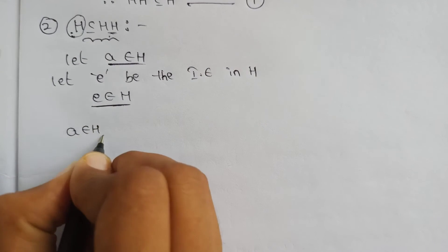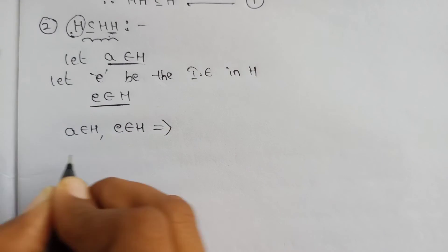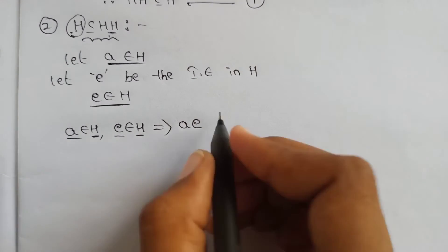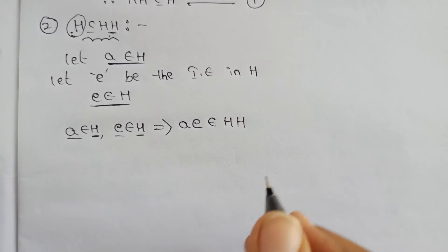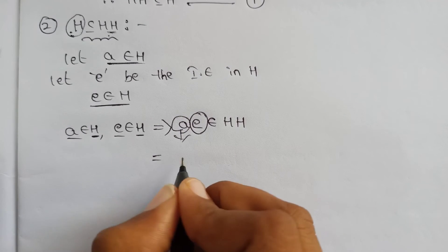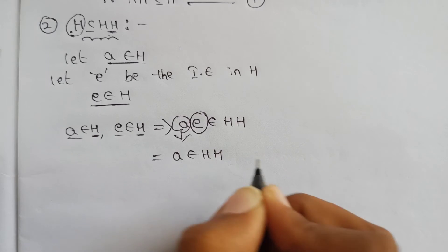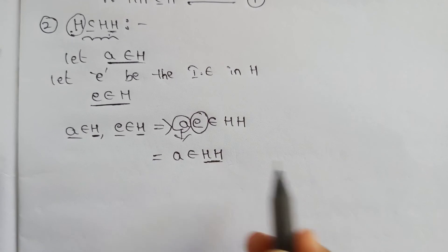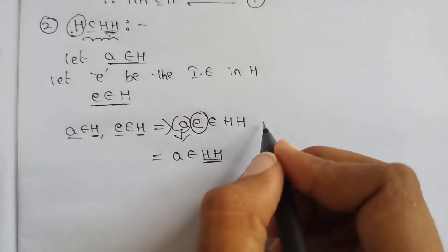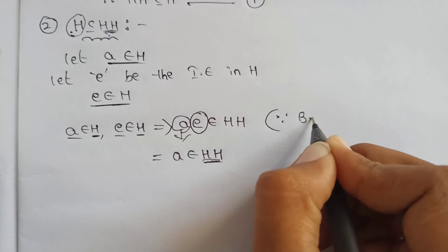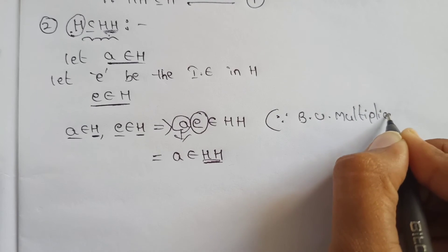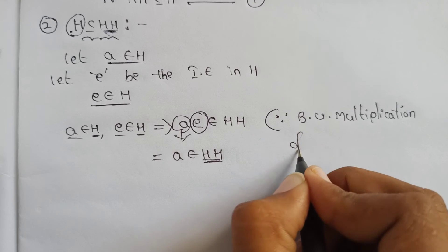Let A belong to H and E belong to H. Then A·E equals A. Since both A and E belong to H, the product A·E belongs to H·H. Therefore A belongs to H·H. By using the multiplication of two elements, we conclude A belongs to H·H.